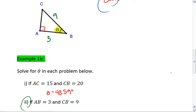For this example, we're working with the adjacent and the hypotenuse, and that gives us cosine. We know cosine of theta equals 3 over 9, which is 1 third. Cosine theta equals 1 third.